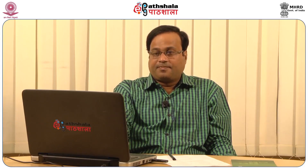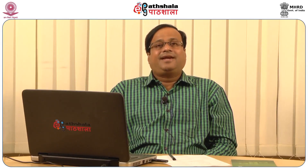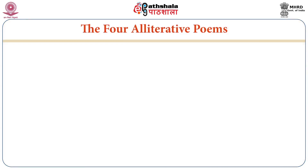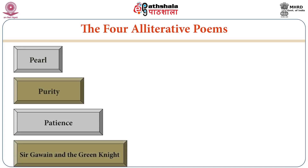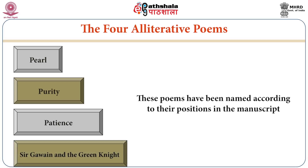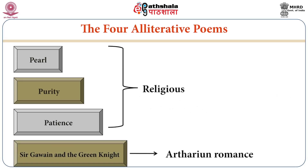Let us now talk about some important alliterative poems of the time. Number one: Pearl, which is essentially symbolic with overtones in many contexts. Number two: Purity. Number three: Patience. Number four: Sir Gawain and the Green Knight. These poems have been named according to their positions in the manuscript. The first three are religious while the last one is an Arthurian romance.